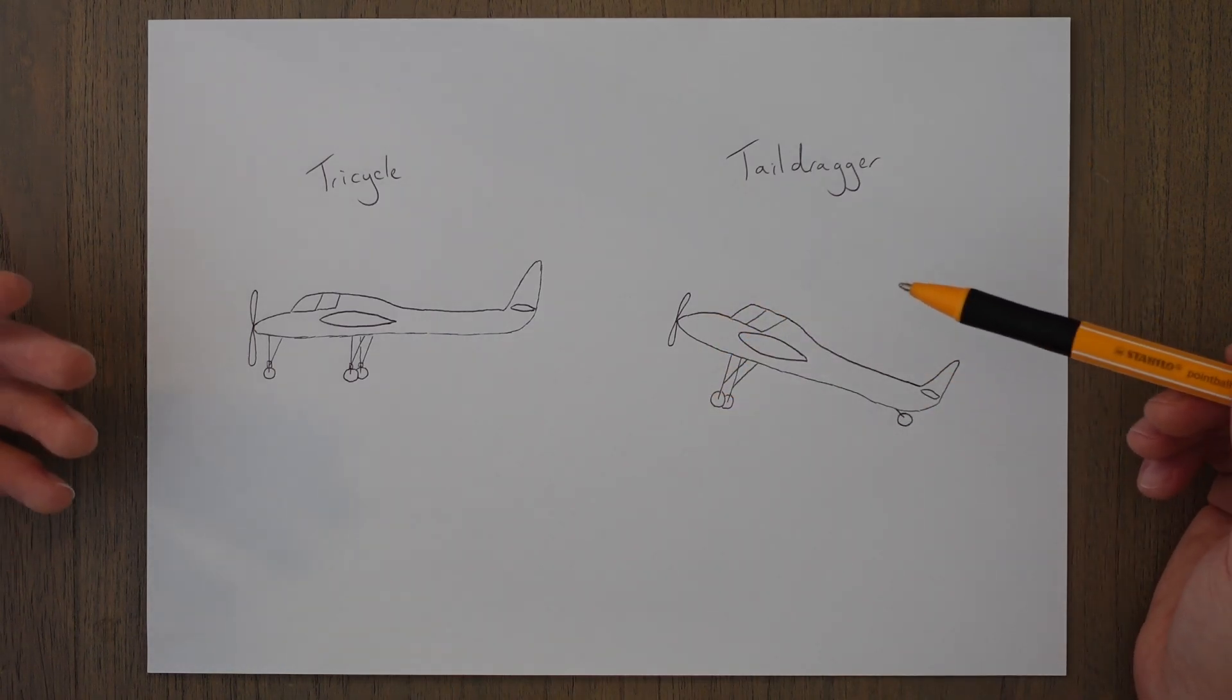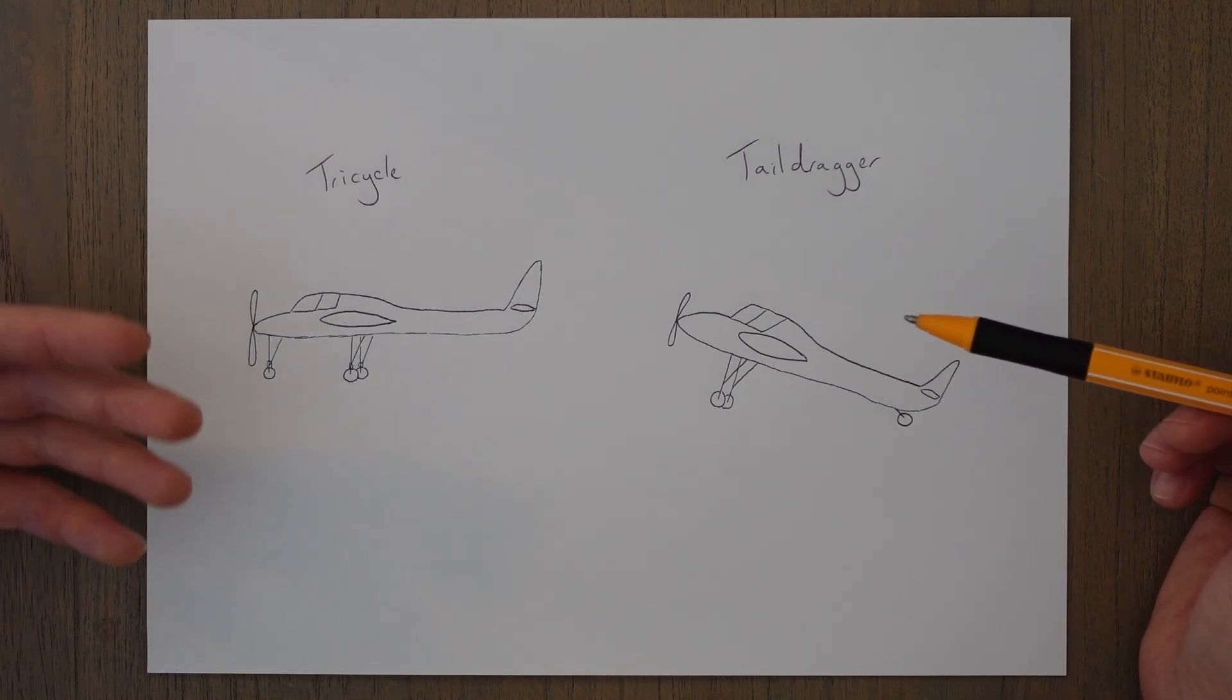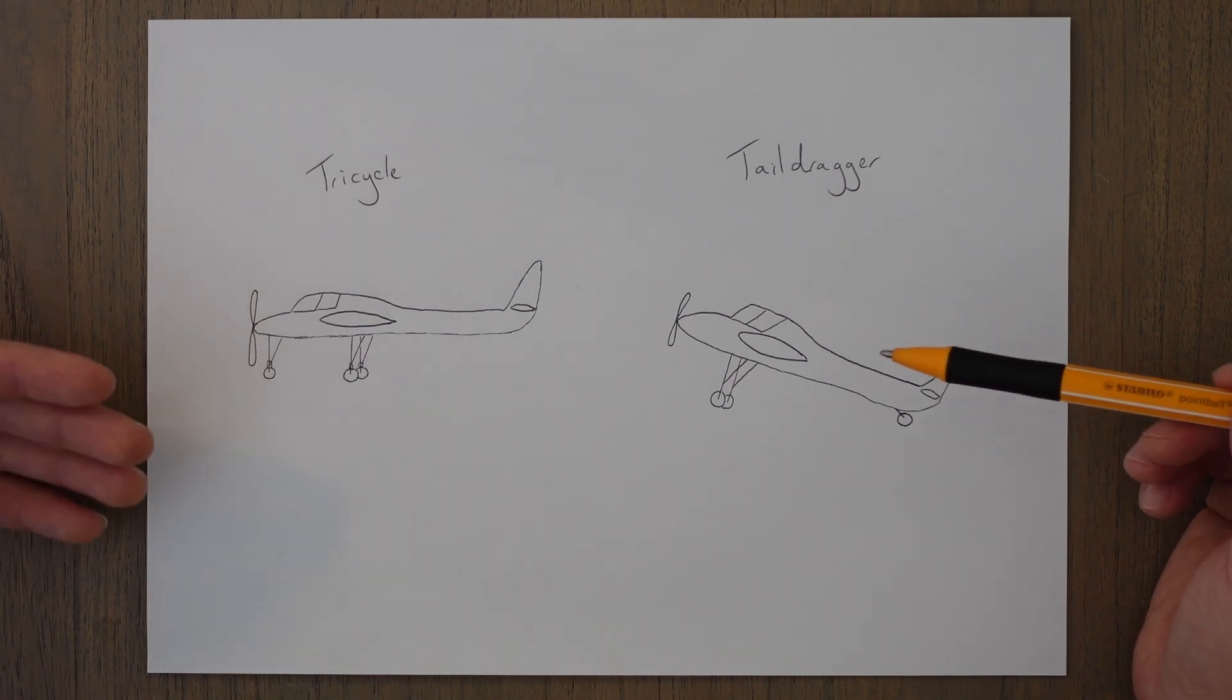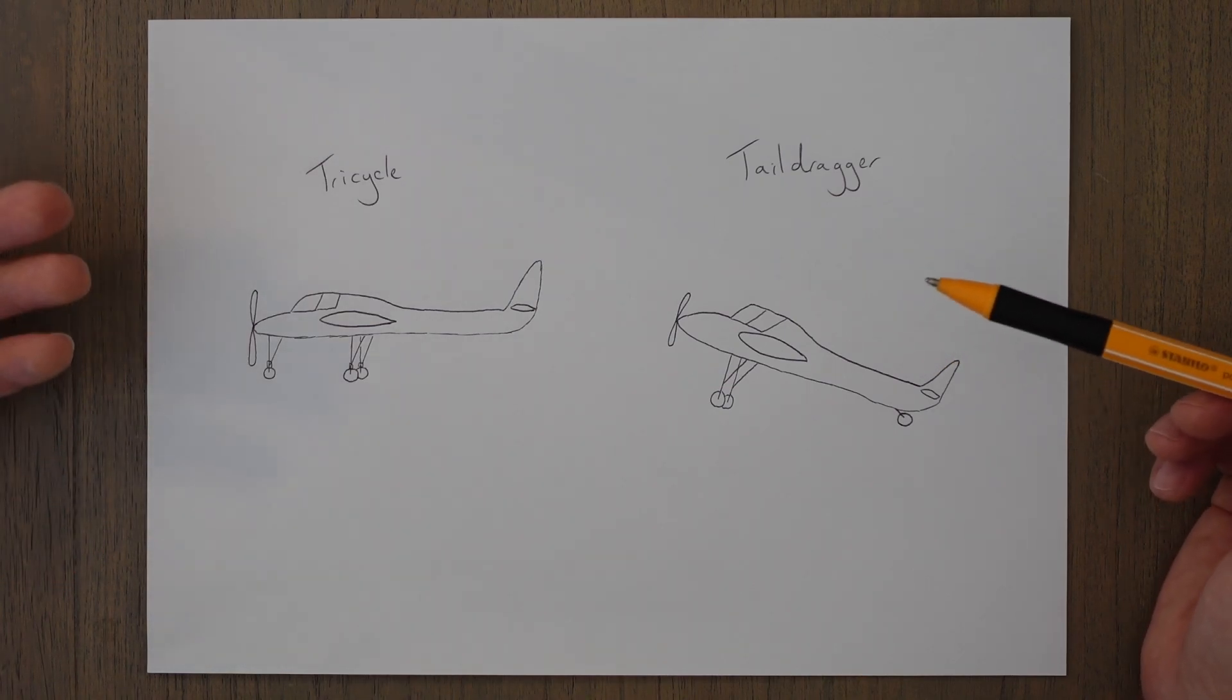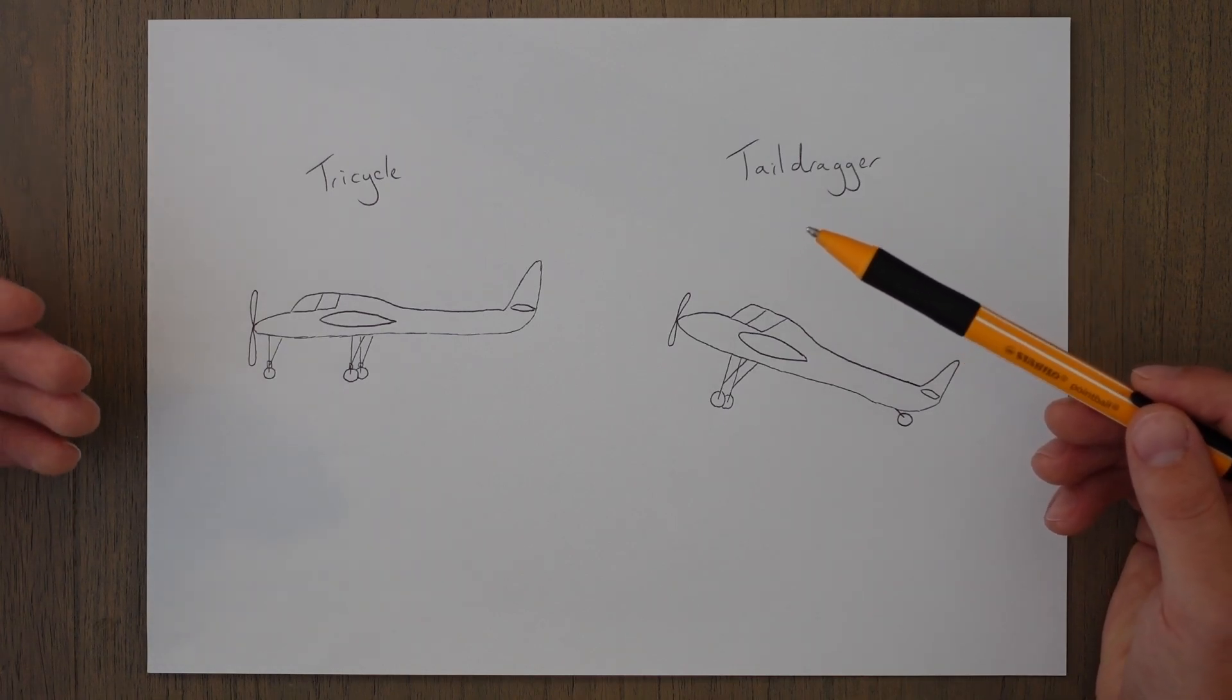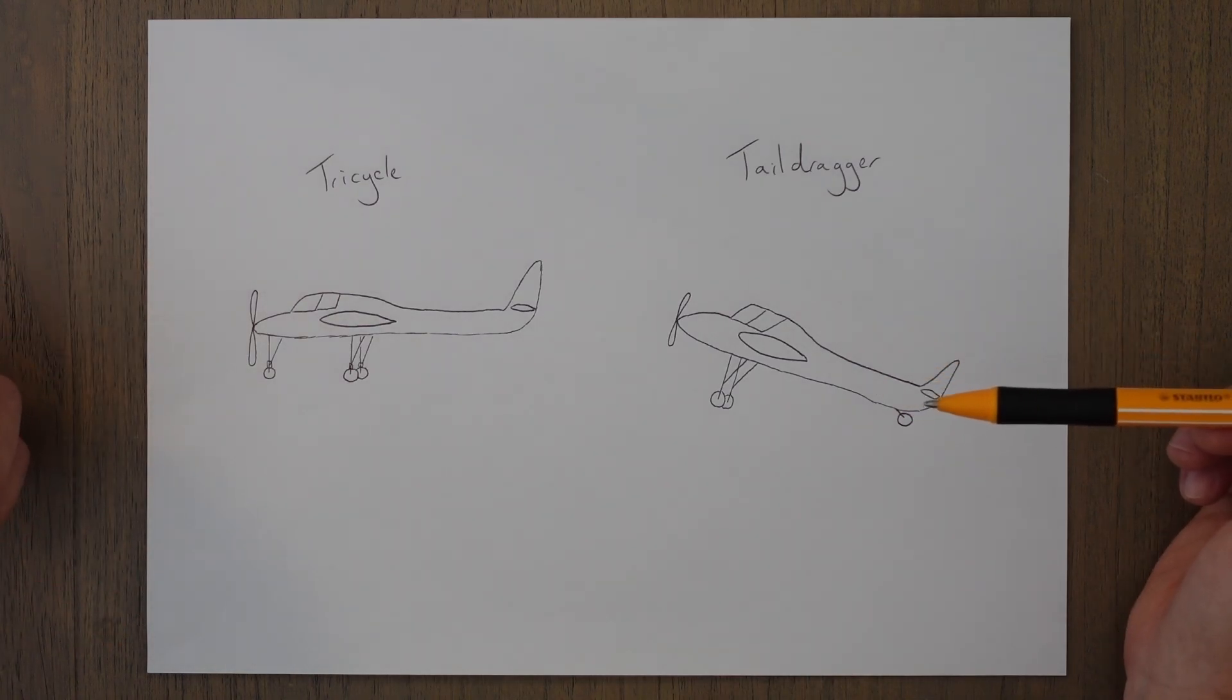Tail wheel designs are generally lighter and simpler when compared to tricycle designs, which means lower manufacturing and maintenance costs. However, the tail dragging arrangement is less stable and controllable on the ground, which makes them harder to handle. The restricted forward visibility during taxiing as well, due to that nose-high attitude, also increases the difficulty of maneuvering whilst on the ground.